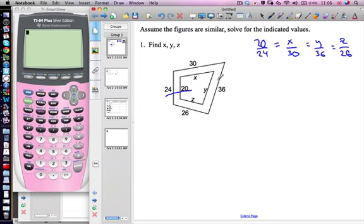Notice I'm always putting the same shape on the top, so in this case I've put the smaller shape on top and measurements for the bigger shape on the bottom.